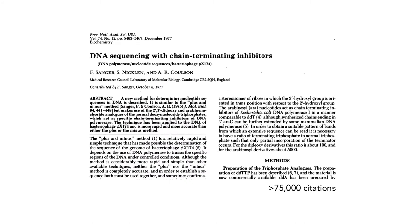Sanger sequencing was first introduced in a paper published in 1977 in the Proceedings of the National Academy of Sciences. It's just been a major paper in the field. As scientists, we tend to measure the influence of a paper by the number of times others have cited it. This particular paper has had over 75,000 citations. To put this in perspective, a pretty good paper might get 30 or 40. This just goes to show how influential this particular sequencing technology has been.